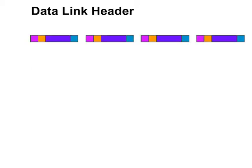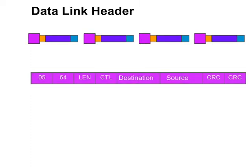Let's look at the DataLink layer header in detail. The DataLink header begins with the 0564 framing characters, followed by the frame length, a control code, destination and source addresses, and CRC bytes that are added to the end of the DataLink header.